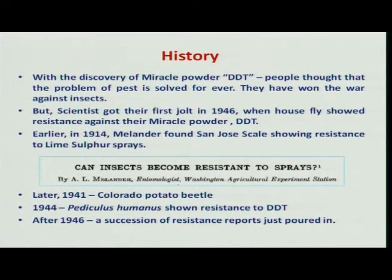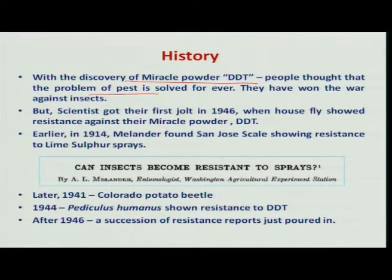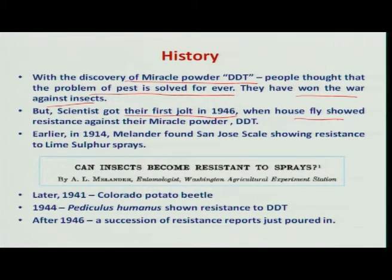If you trace the history of insecticide resistance in insects, it goes as far back as 1914. Many people thought that with the discovery of the miracle powder DDT, the problem of pests was solved once and forever, and that they had won the war against insects — but that statement did not remain valid for long. Scientists got their first jolt during 1946 itself, when the house fly showed resistance to DDT.